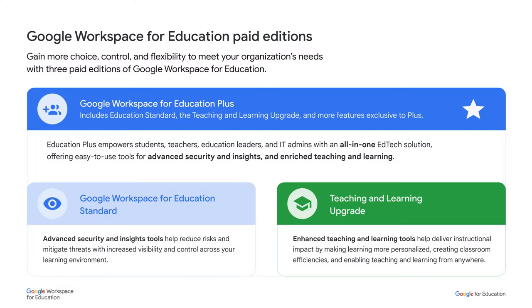Let's get started with assigning licenses. For your school staff to start using premium features, they must have a license assigned to them. You can assign licenses to individuals, everyone in a particular organizational unit, or to everyone in your domain. You can automatically assign a license to everyone in your school or manually assign licenses for individual users. Check out the link in the video description for a step-by-step guide. If you are a teacher and don't have a license assigned to you, reach out to your school administrator. You can also see how to find your administrator in the video description.